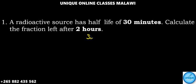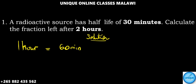Let's have the solution using the formula method. What we need to do is find the number of half-lives. The half-life here is 30 minutes. In other words, how many 30-minute intervals are there in two hours?